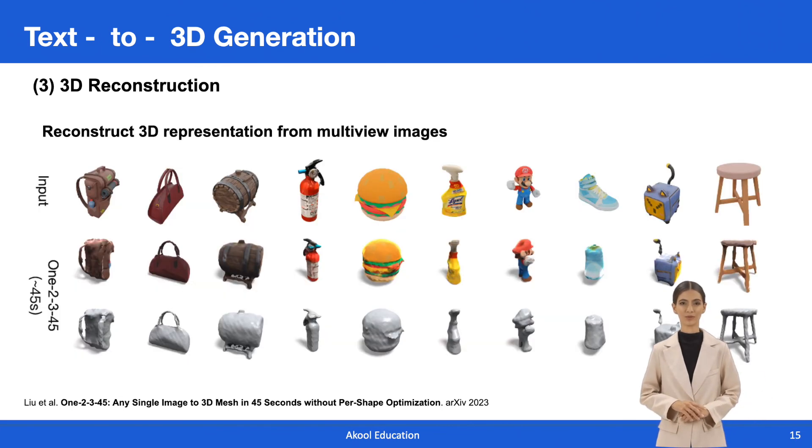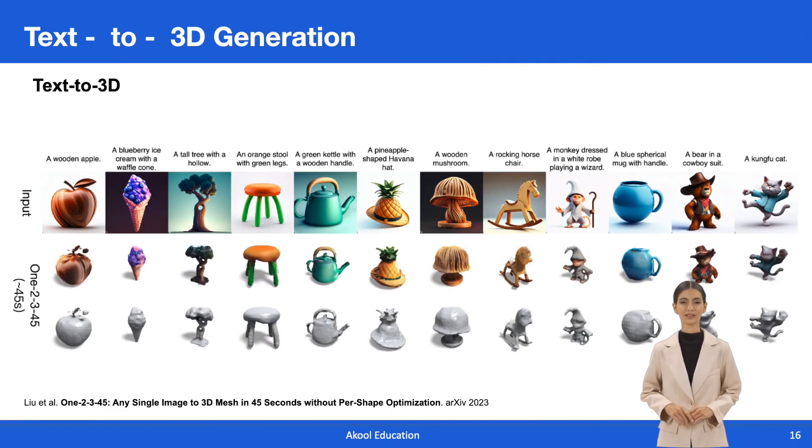Utilizing an open-source framework called Score Jacobian Chaining, SJC, a 3D representation can be optimized incorporating priors from text-to-image diffusion models. The figure presented below showcases some of the results obtained from 3D reconstruction using this approach. The model can utilize DALL-E 2 to generate an image conditioned on the text and then lift it to 3D.